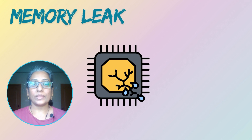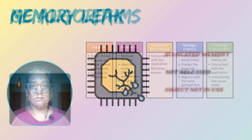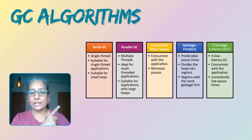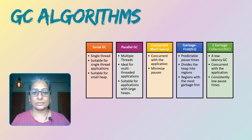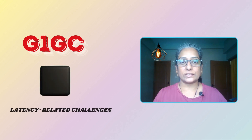A memory leak occurs when allocated memory is not released for reuse, even when it is unused. Java provides several GC algorithms, each with its own characteristics and use cases. Listed here are the various GC algorithms. Let's dig deeper into G1GC, the garbage collection algorithm that Netflix used for a long time before encountering latency-related challenges.